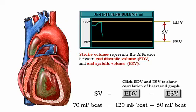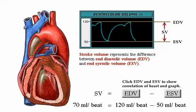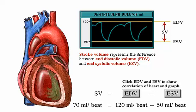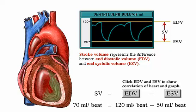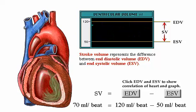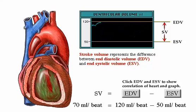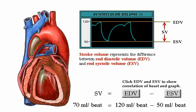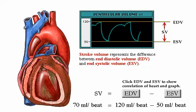Stroke volume is the difference between end diastolic volume and end systolic volume. By the time diastole ends, each ventricle has filled up with blood. This amount of blood is the end diastolic volume, or EDV.